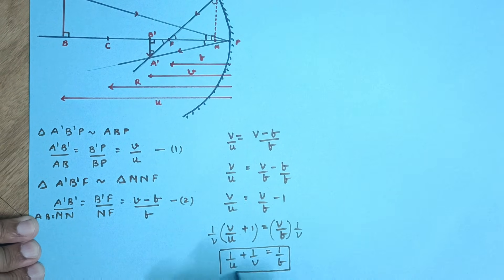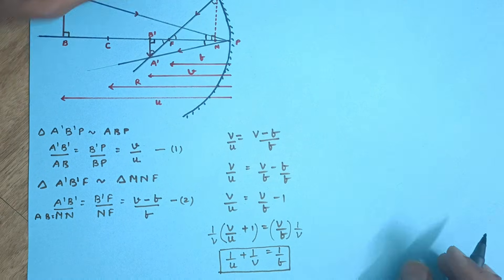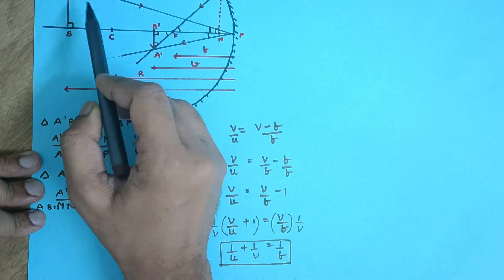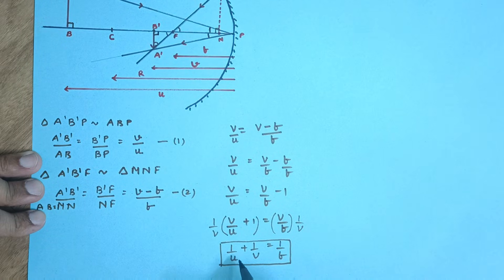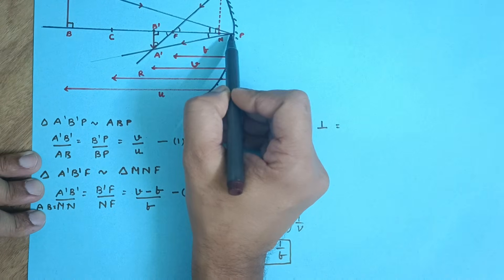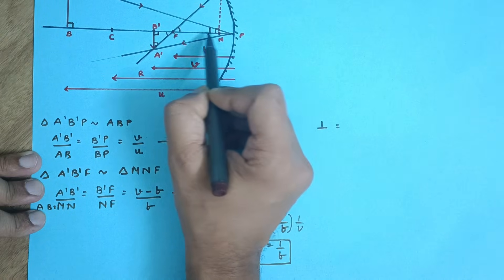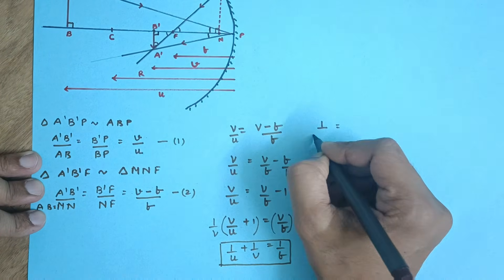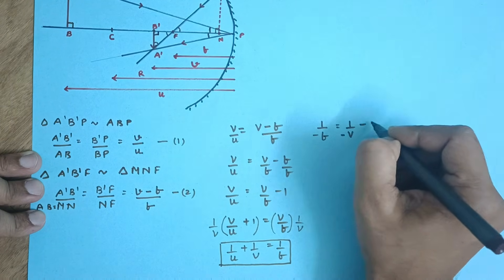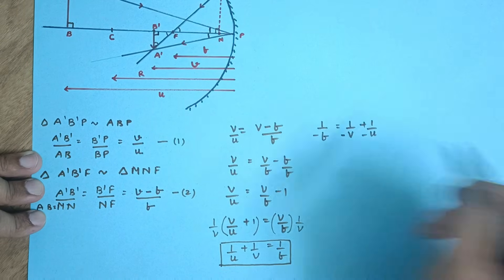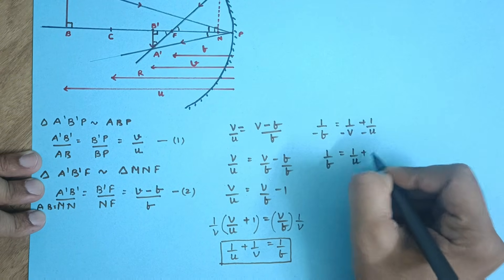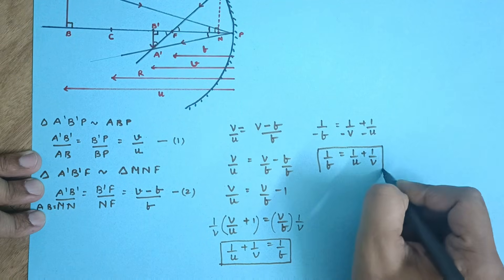This is our final derivation, but we need to apply sign conventions since we are measuring the object distance from the pole to the object against the direction of the incident ray, so U becomes negative. F is also negative — from here to here F is negative — and V is negative too. So all distances are negative in this case. Substituting: 1/(−V) + 1/(−U) = 1/(−F), and cancelling the negatives we get the same equation: 1/F = 1/U + 1/V.